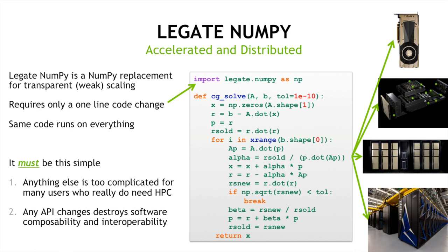We really do think it has to be this simple. There are a lot of users out there who like the simplicity of NumPy but just don't have the computer science expertise to write MPI and CUDA code to target these large machines by hand. It also has to be a true drop-in replacement — if you don't maintain the NumPy API exactly, you destroy all the composability and interoperability with existing software built on top of NumPy.